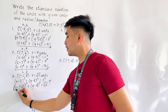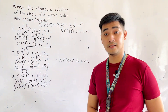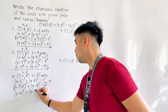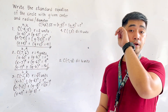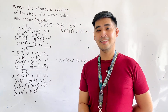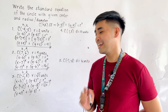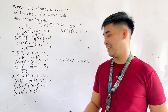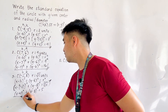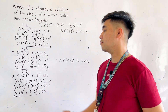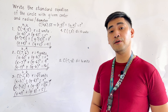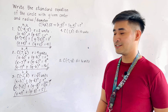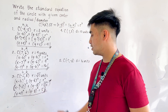Simplifying: x minus minus becomes plus. This becomes x plus 2, quantity squared, plus y minus 8, quantity squared. When a square root is squared, we cancel out the root sign. So square root of 5 squared simply equals 5. Therefore, the standard form is x plus 2, quantity squared, plus y minus 8, quantity squared, is equal to 5.